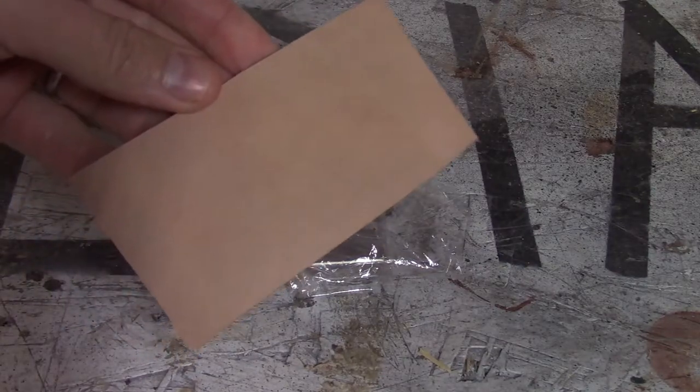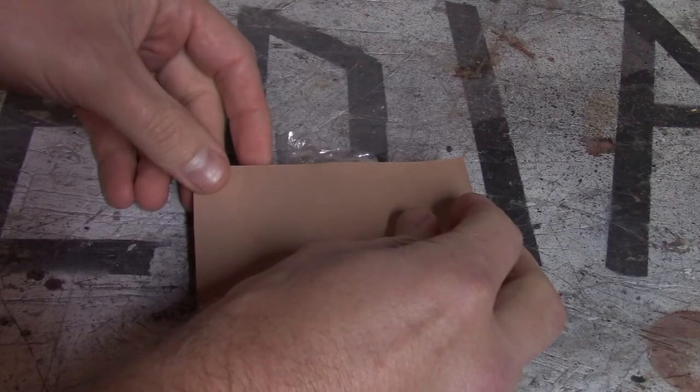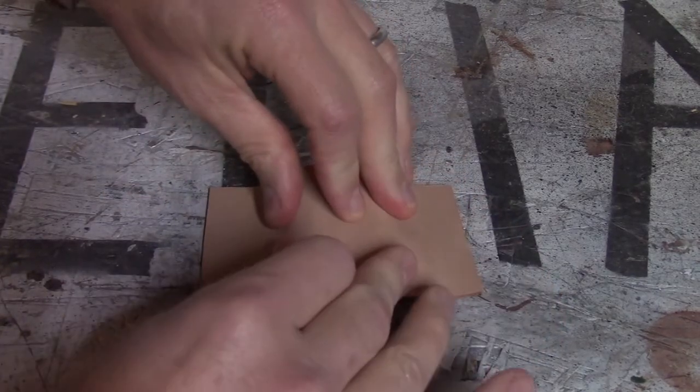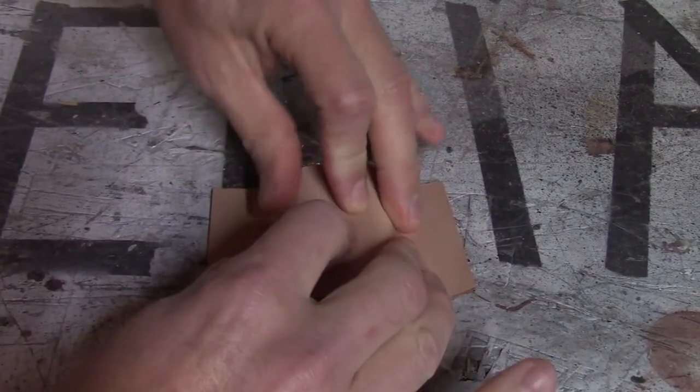For those unfamiliar with wet molding, it goes something like this. Dampen your leather and then just lay it across whatever you want to mold around. In this case, our lighter.